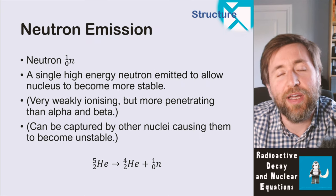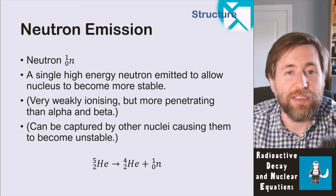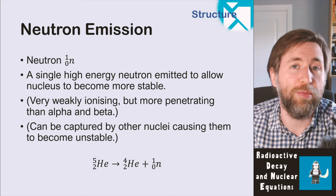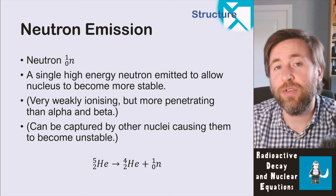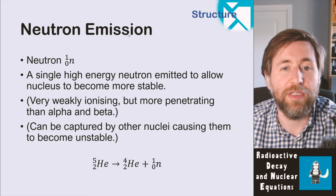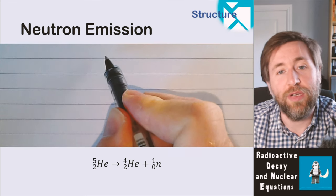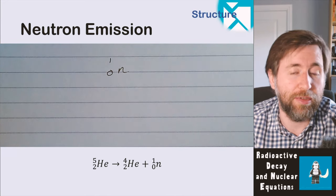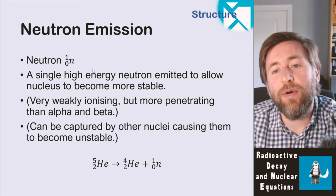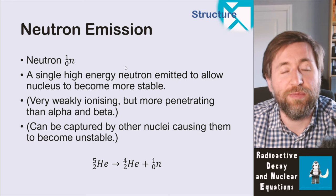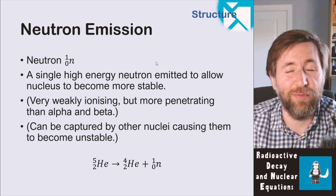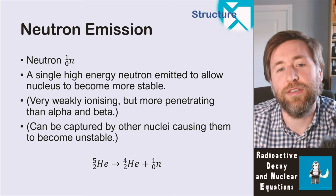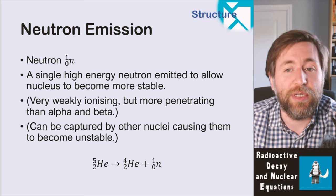There's one more radiation you need to be aware of — neutron emission. It is in the GCSE and you do need to know it. Sometimes an isotope can become more stable by simply getting rid of a neutron. The neutron notation is one in the mass number, because a neutron has a mass of one, but zero in the proton number, and a little n. It's a single high-energy neutron. It can do ionizations, but very weakly, through what we call secondary effects. Essentially it's emitted to allow the nucleus to become more stable.